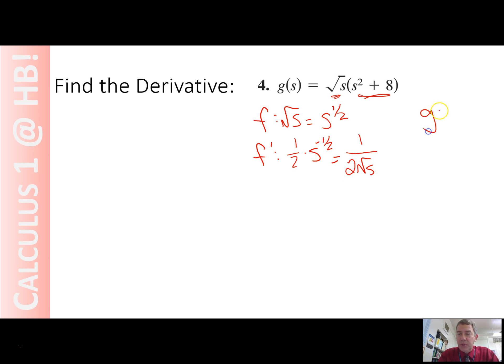g is s squared plus 8, so g prime is 2s. And our derivative, according to the product rule, the derivative is going to be f prime times g plus g prime times f. Simple enough.